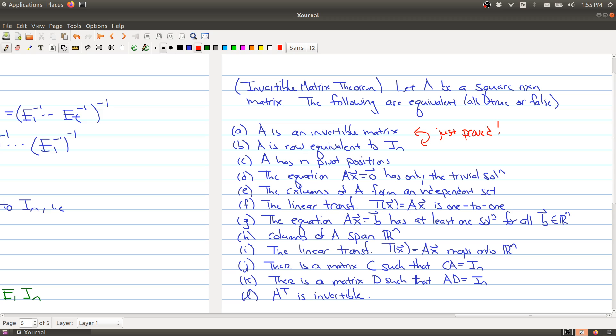The equation Ax equals zero has only the trivial solution, and that's because if you have pivots in each row and column because it's square matrix, when you look at this system you can only have, you have no free variables.